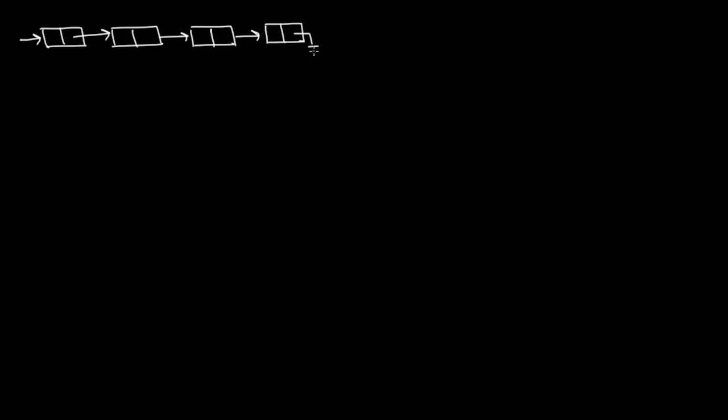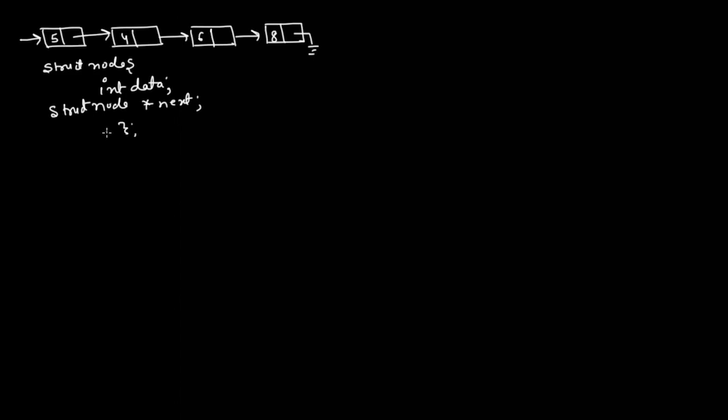Now let us see an operation related to how to search for some data in a linked list — if the user has given some data. Let us suppose we have a linked list containing the data 5, 4, 6, and 8. The structure of this linked list is: struct node with int data and node star next.